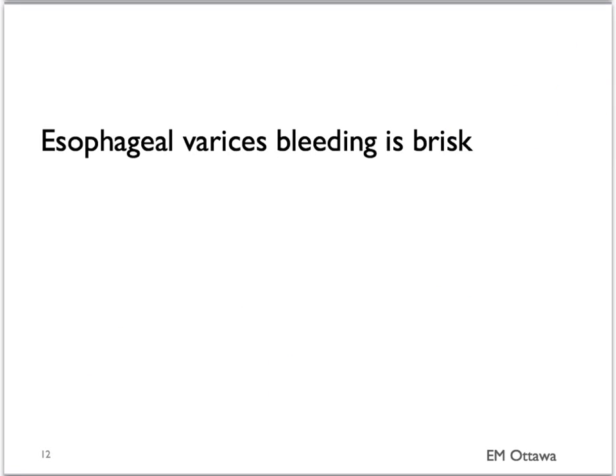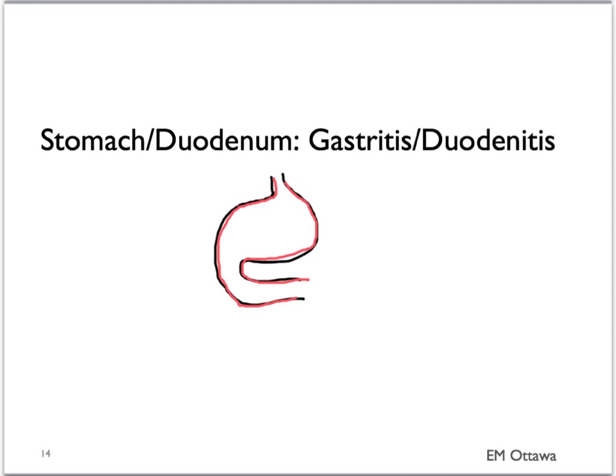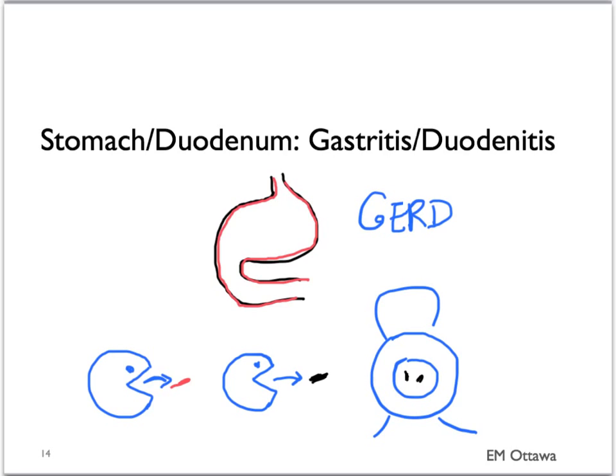Going further distally, upper GI bleed can be from the stomach or the duodenum. First, inflammation such as gastritis or duodenitis has a very similar presentation to patients with esophagitis — they tend to have GERD symptoms. In terms of presentation, it can present as bleeding through hematemesis, coffee ground emesis, or melena. In all circumstances, blood from gastritis or duodenitis tends to be in small amounts as well.